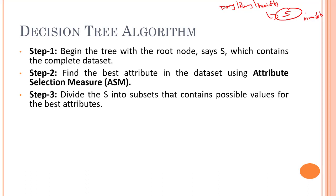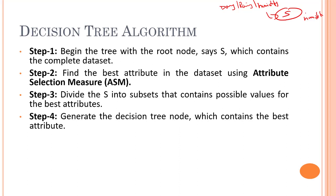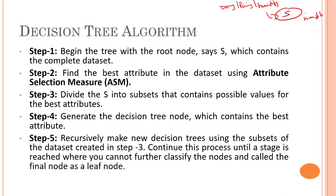We take the complete dataset, put it into the root node, and then using an attribute selection method we determine that the root node should be humidity. The next step is to divide the complete root node into subsets containing the possible values for the best attribute — in our case, humidity. Then we generate the decision node that decides the branching condition.